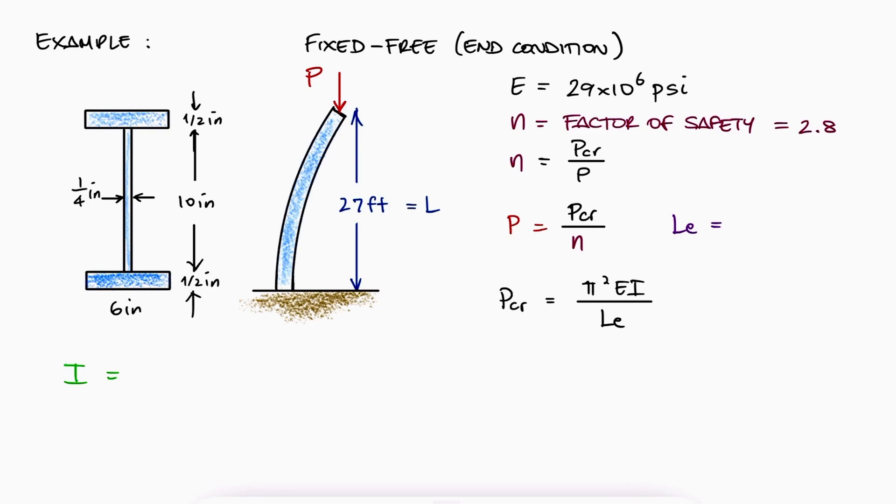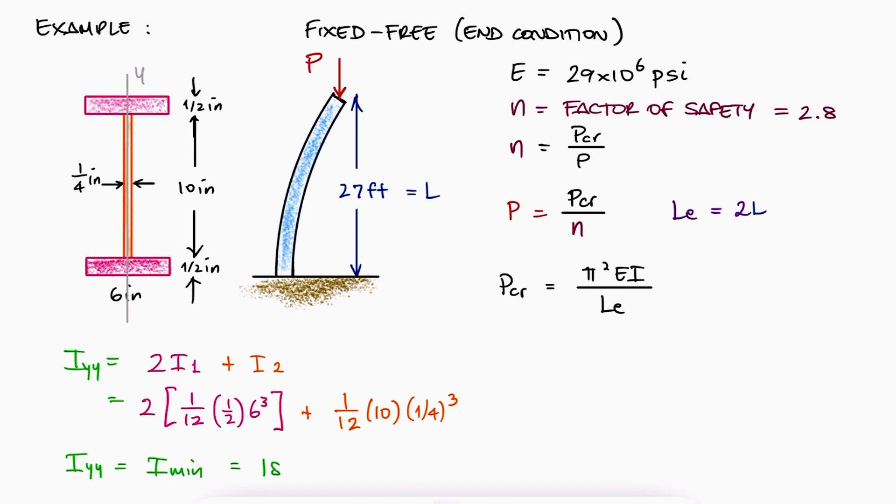The effective length L_e for a fixed end to free end condition would be 2L. The second moment of area would be the minimum second moment of area, which in this case is the I about the y-axis. The second moment of area could then be calculated adding two pink I's and one orange I. Since we're finding the second moment of area about the y-axis, the bases would be the vertical dimensions and the heights would be the horizontal dimensions.